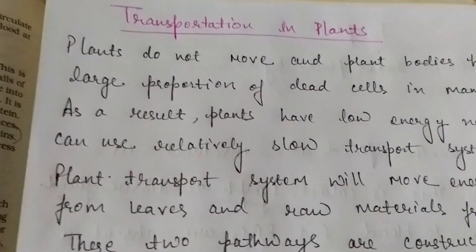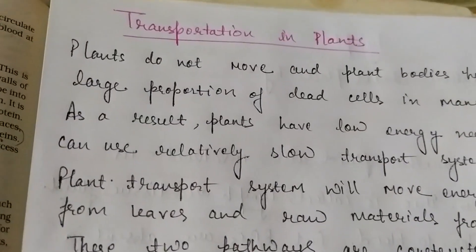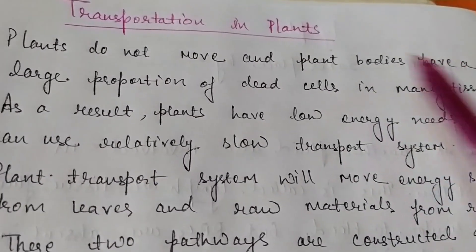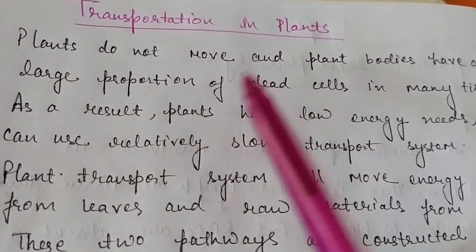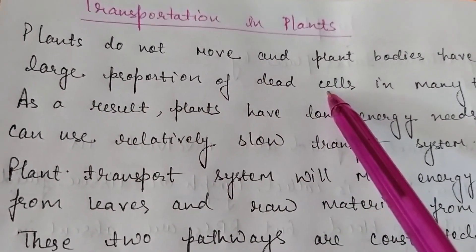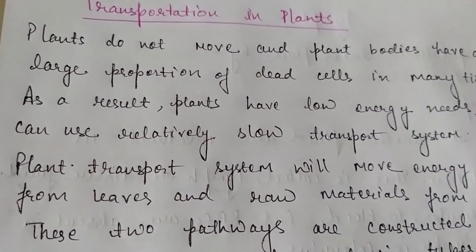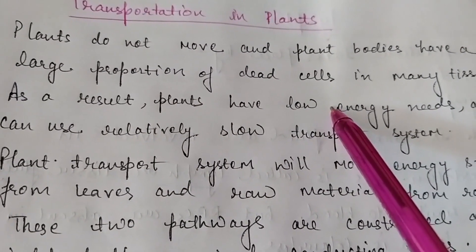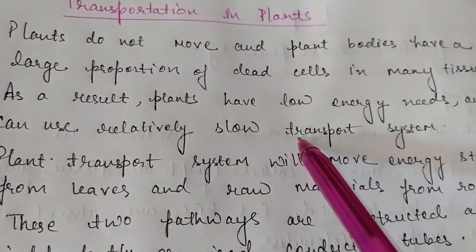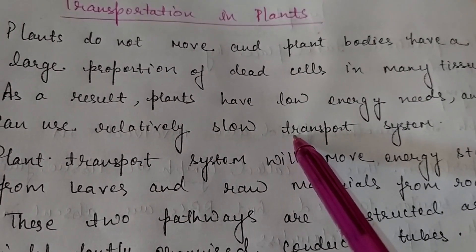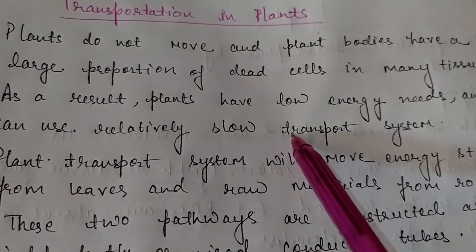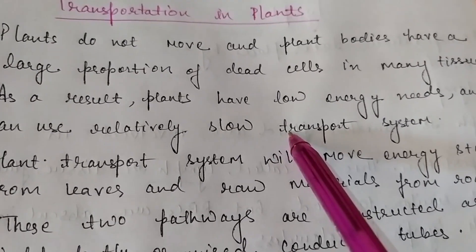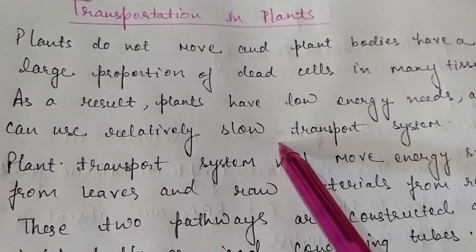Now all of you know that plants do not move — they don't move from one place to another. Plants have a large proportion of body in which a lot of dead cells are present in their tissues. Therefore, as a result, plants have low energy needs and can use a relatively slow transport system. So plants use very little energy and have a very slow transportation system.